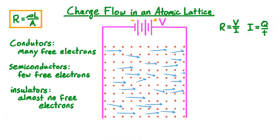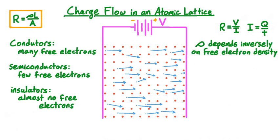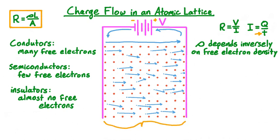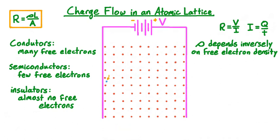So the resistivity of a material depends inversely on the free electron density, because materials with a higher free electron density pack more free electrons into the same unit volume, allowing more charge to flow for the same applied voltage. The other factor that goes into determining the current for an applied voltage is the time that it takes for the charge to flow. Classically, the current is made up of electrons that leave the negative terminal of the battery, travel around the circuit — that is, across the lattice — and then re-enter the positive terminal of the battery. So the time that we are interested in when calculating the current is the time that it takes a single electron to move across the entire lattice.